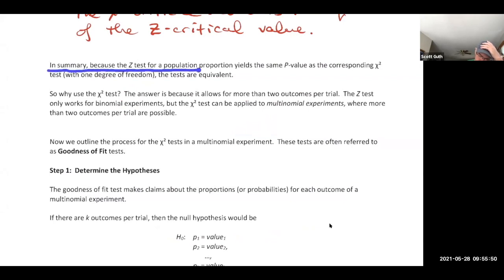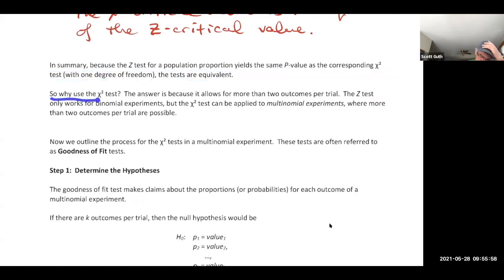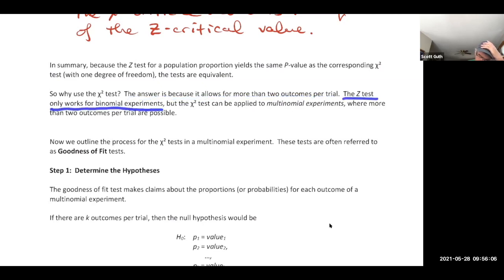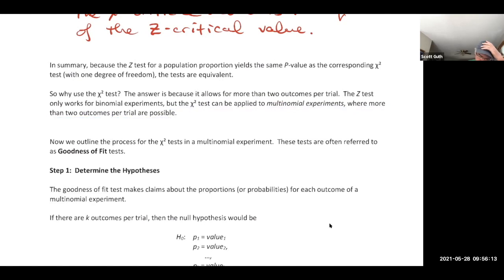In summary: because the Z test for a population proportion yields the same p-value as the chi-square test with one degree of freedom, the tests are equivalent. We use chi-square because it allows for more than two outcomes per trial. The Z test only works for binomial experiments, but chi-square can be applied to multinomial experiments.